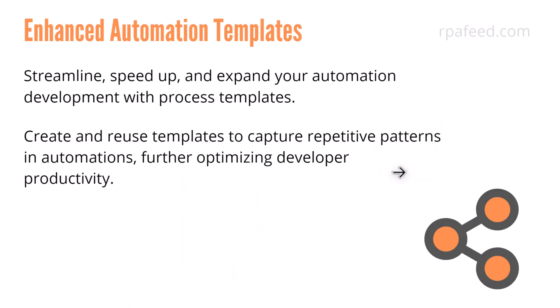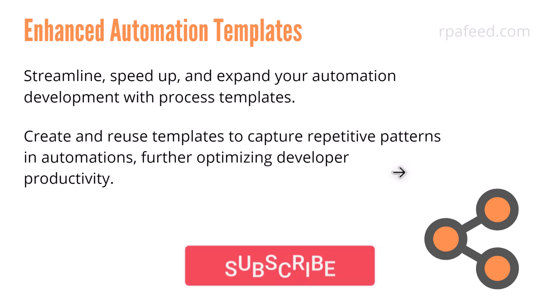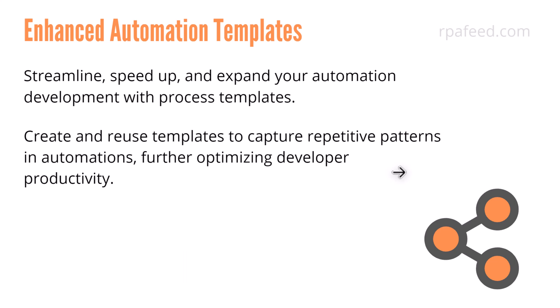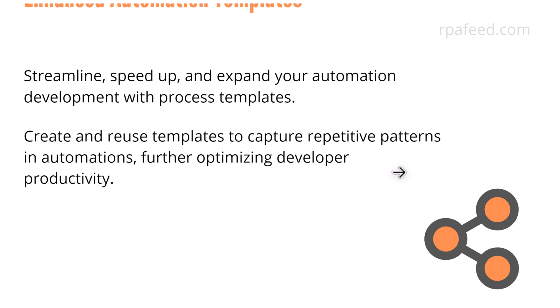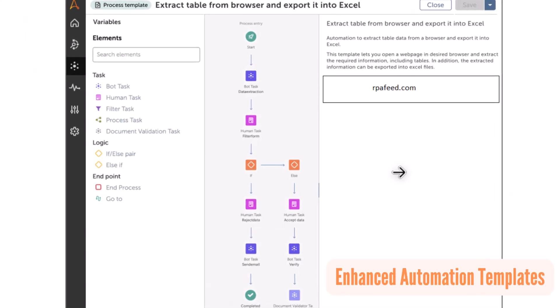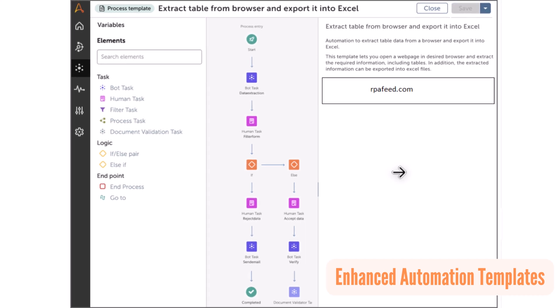Enhanced automation templates — with this feature, you are able to create and reuse templates that are quite repetitive in nature. For example, if you want to establish certain best practices, similar to what we had for A360 task bots, where we created a bot framework and saved it as a template, so whenever a new automation starts we use that template as boilerplate code — a similar option is now available for your processes as well. As shown, it's called a process template. Earlier it was only available for A360 task bots, but now it is available for processes as well.